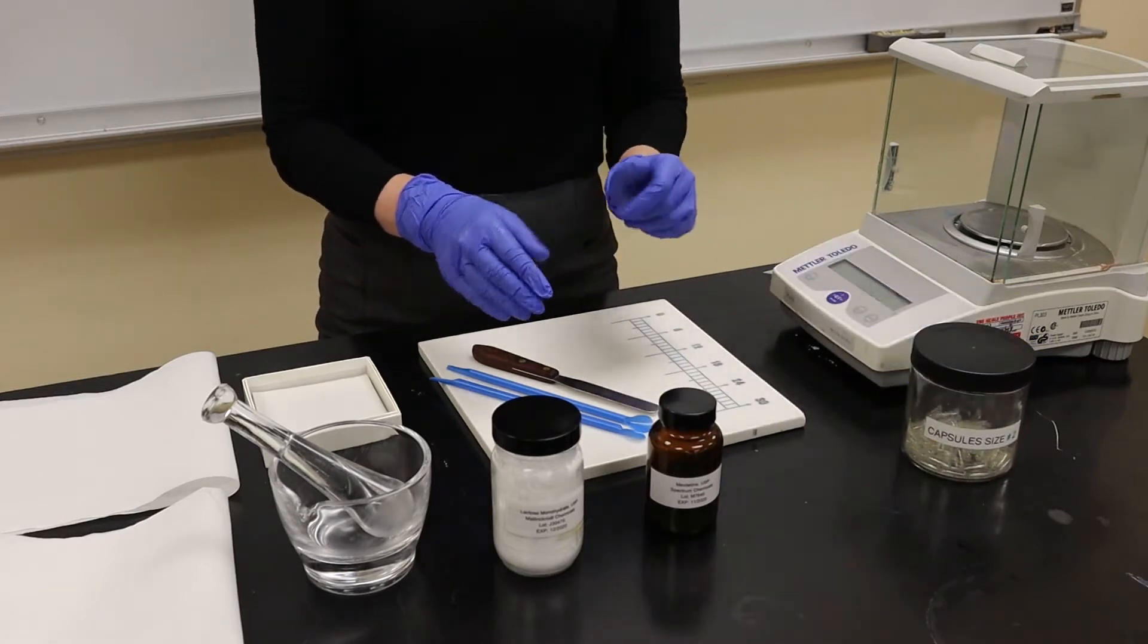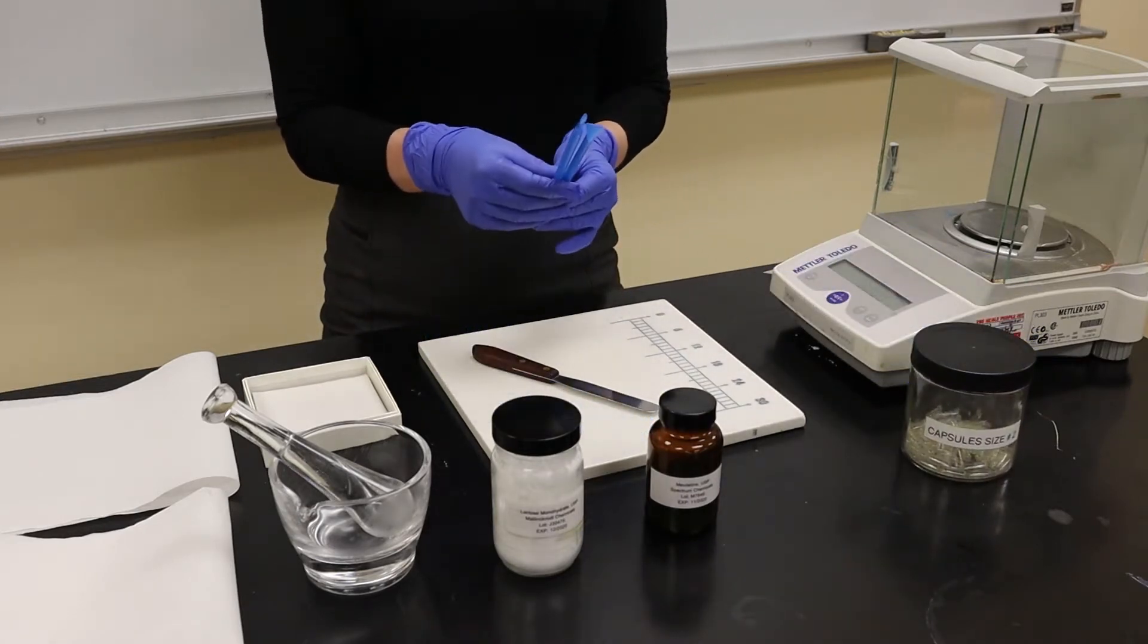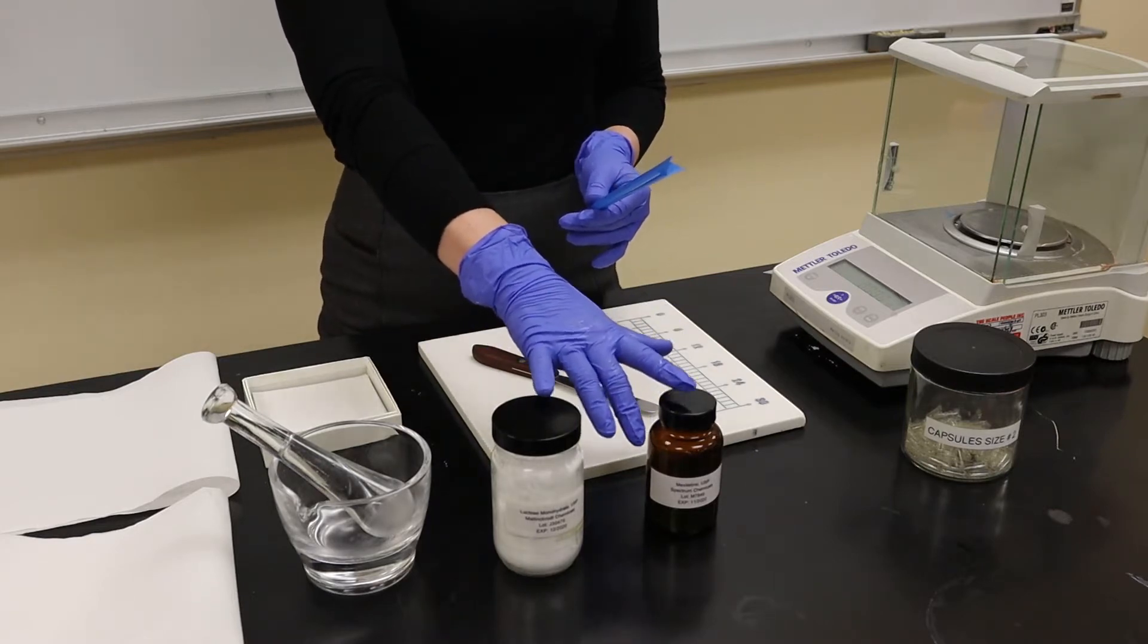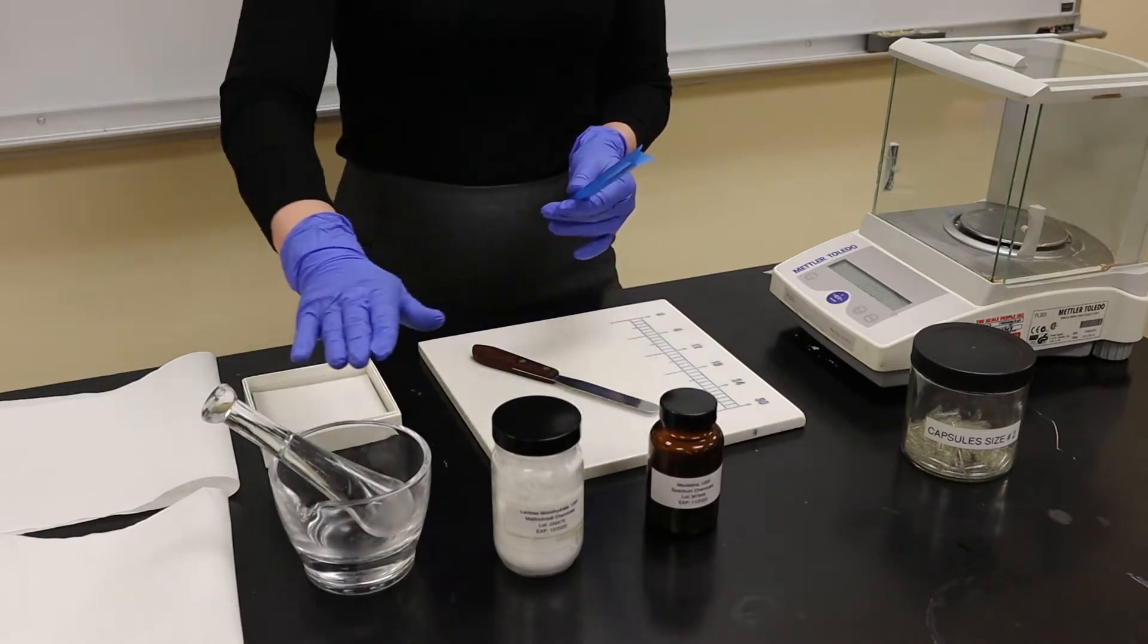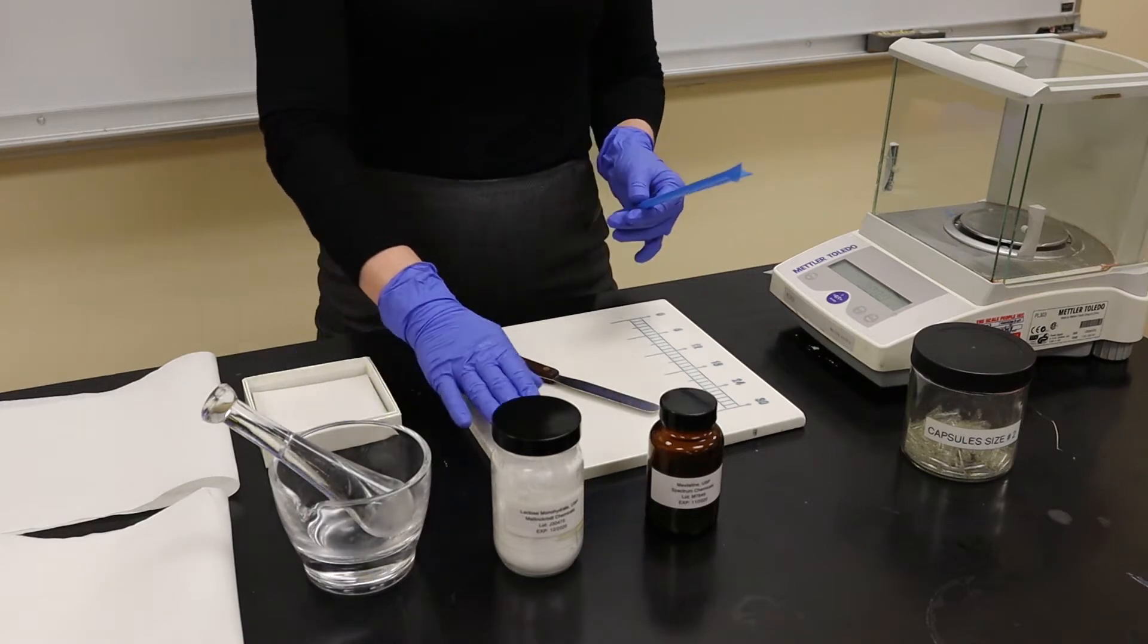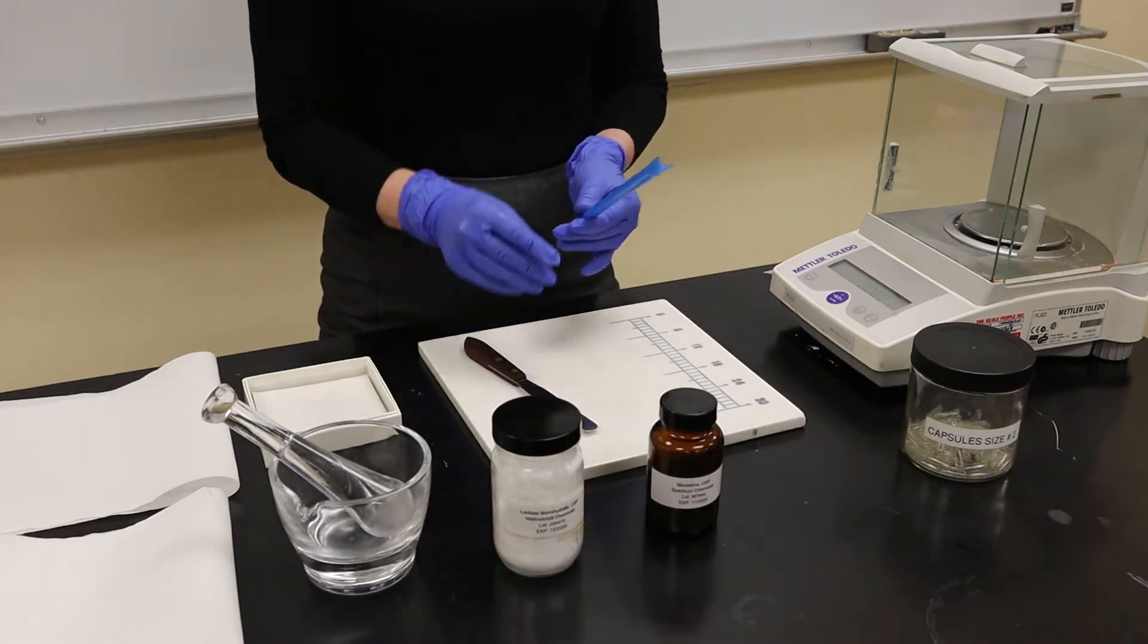We're going to be using two disposable spatulas, one in order to take out our powder for both our mexiletine and our lactose. We're going to use a glass mortar and pestle, our ointment slab, and a spatula.